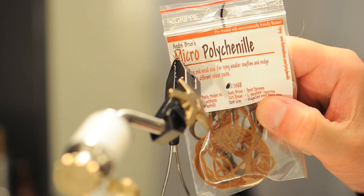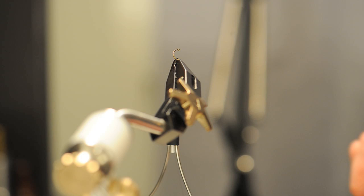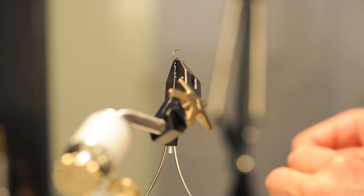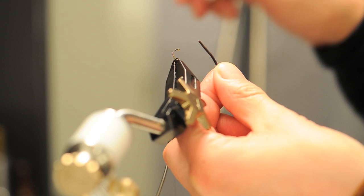Now we are going to tie in the Micro Polish Nile Extended Body, the dark grey color for the BBOs. Cut off a short piece and burn it quickly at the end to make a taper.